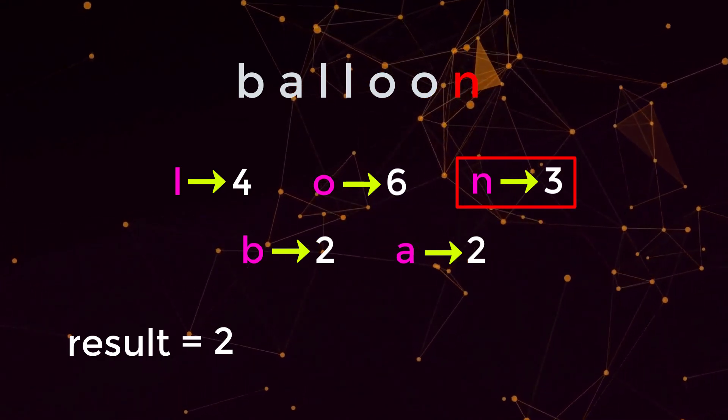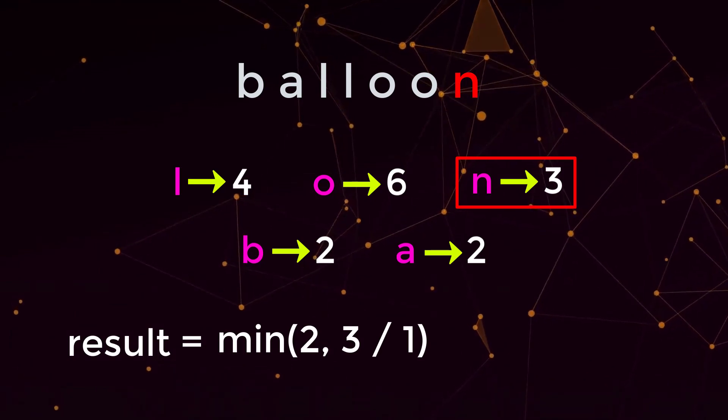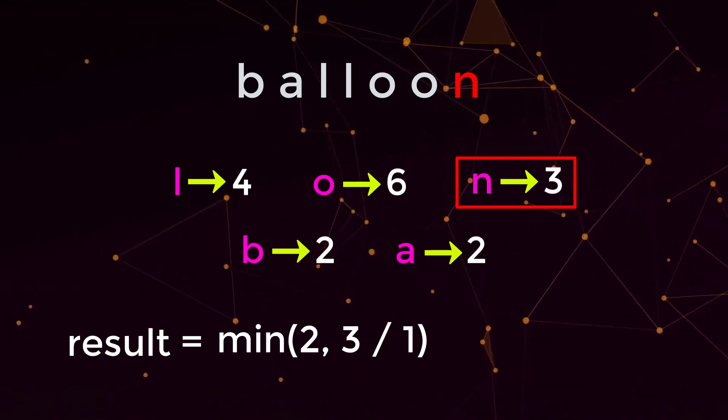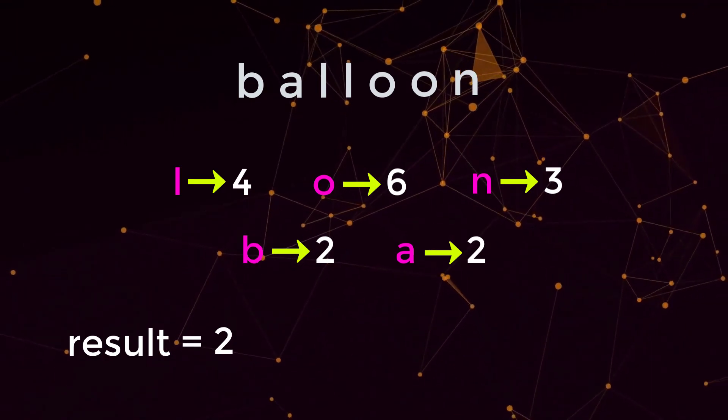which has a value of three. Balloon has only one occurrence of n, so if we do three divided by one, that would be three. So we do the minimum between two and three, which is two. And just like how we discussed earlier, we have two words that can be created from our input.